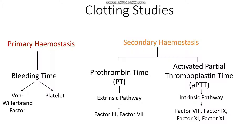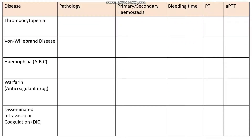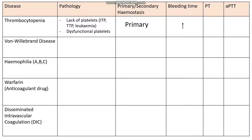Let's move on and look at some diseases and how these clotting times are affected. Starting with thrombocytopenia — 'thrombo' means platelets, 'cytopenia' means lack of. The pathology here is that we're either missing platelets or we have dysfunctional platelets. Because platelets are involved in primary haemostasis, our bleeding time is going to be high. However, we're not affecting the clotting cascade, so our PT and APTT are going to be normal.